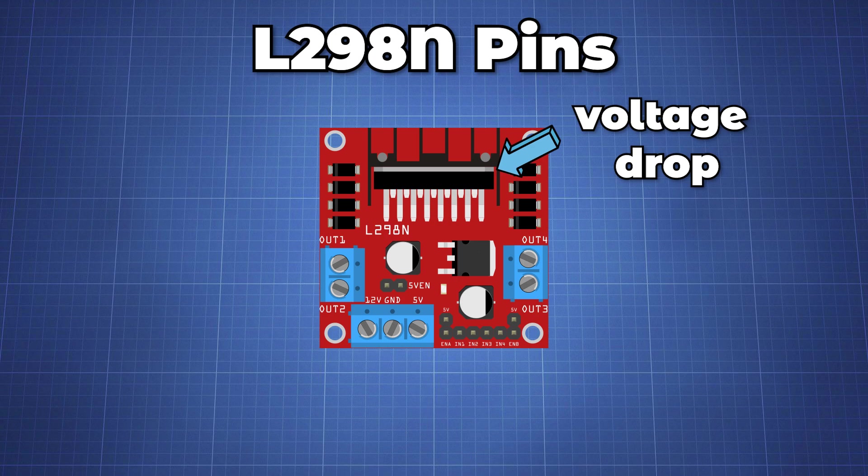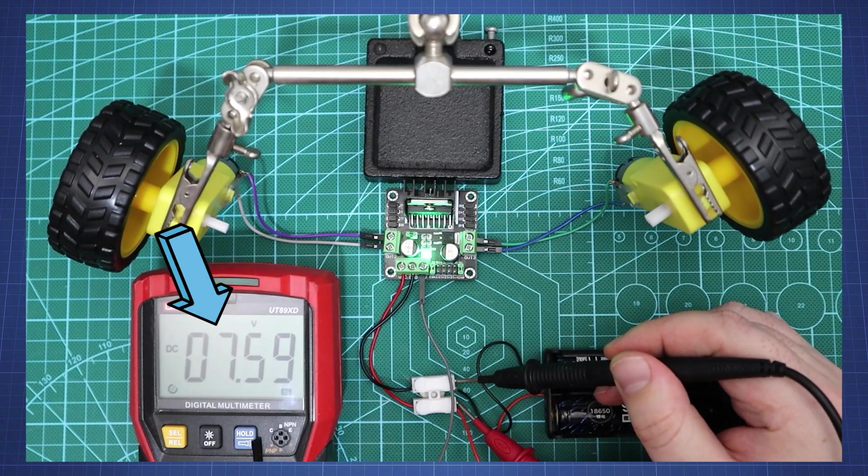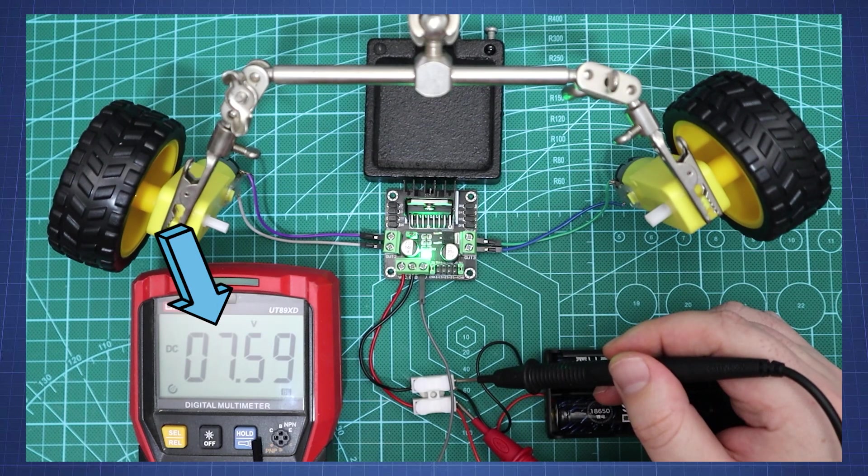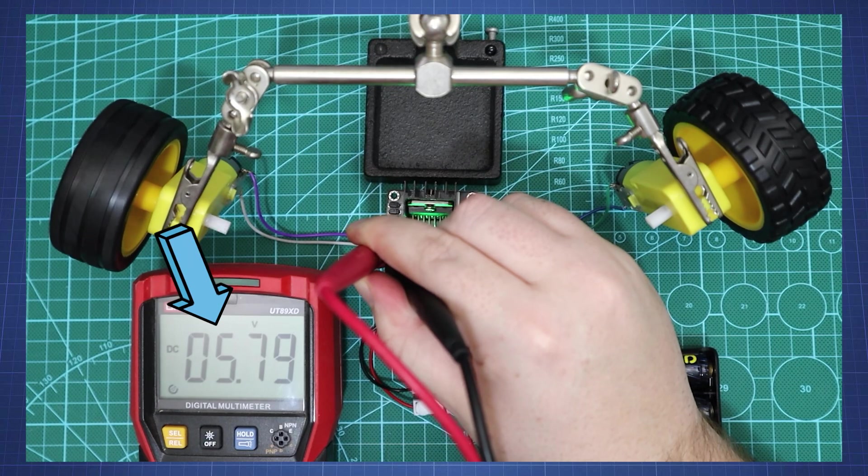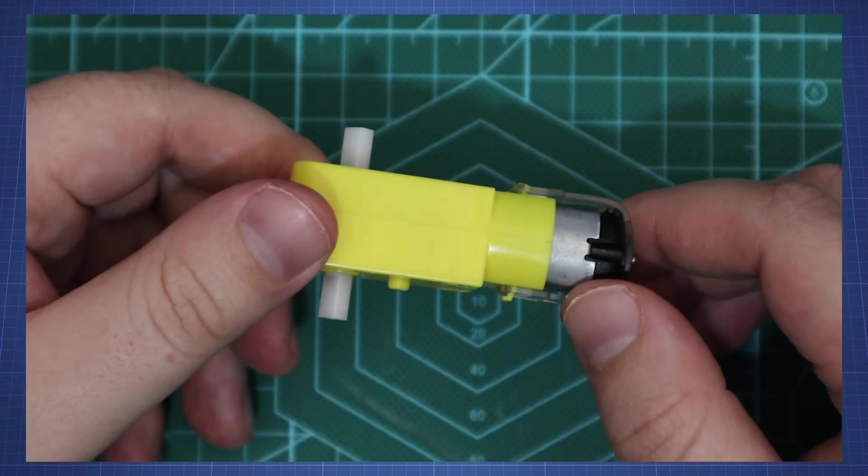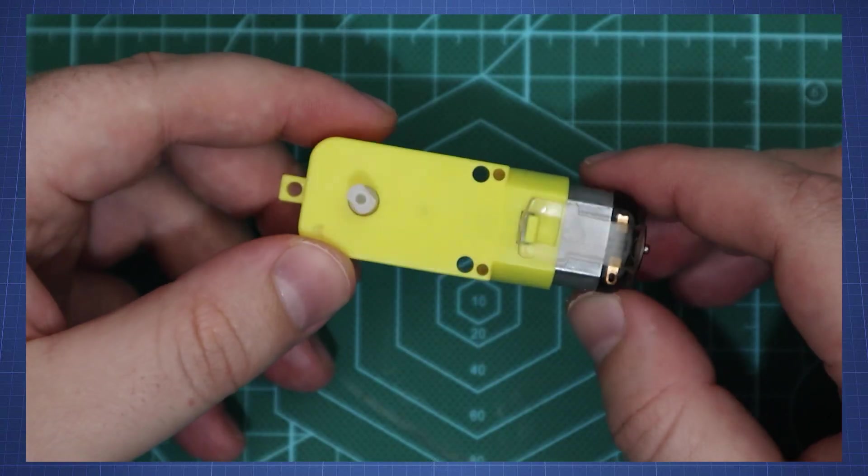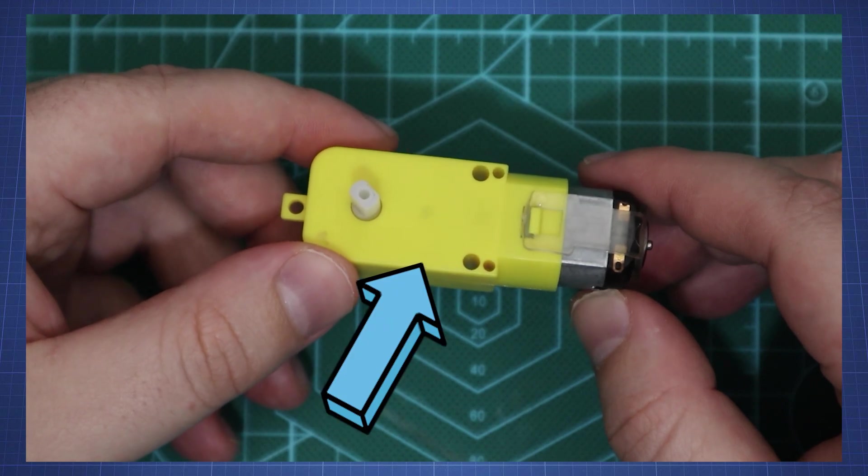You should also note that the IC makes a voltage drop of about 1.5 to 2V. For example if we use 7.59V as our input voltage, the voltage at the motor terminals will be around 5.75V which means that we won't be able to get the maximum speed out of our DC motors due to the voltage drop.